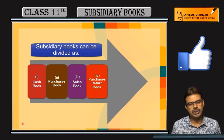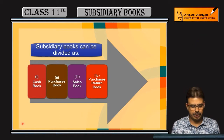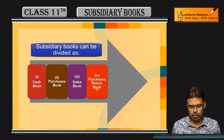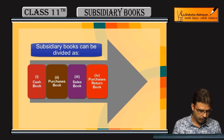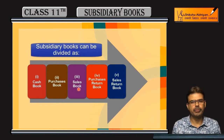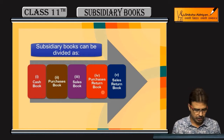After the purchase book, we have the purchase return book. When entries have been passed in the purchase book and there are returns, those go to the purchase return book. Next is the sales return book — credit sales recorded in the sales book, if there is a return, go to the sales return book.